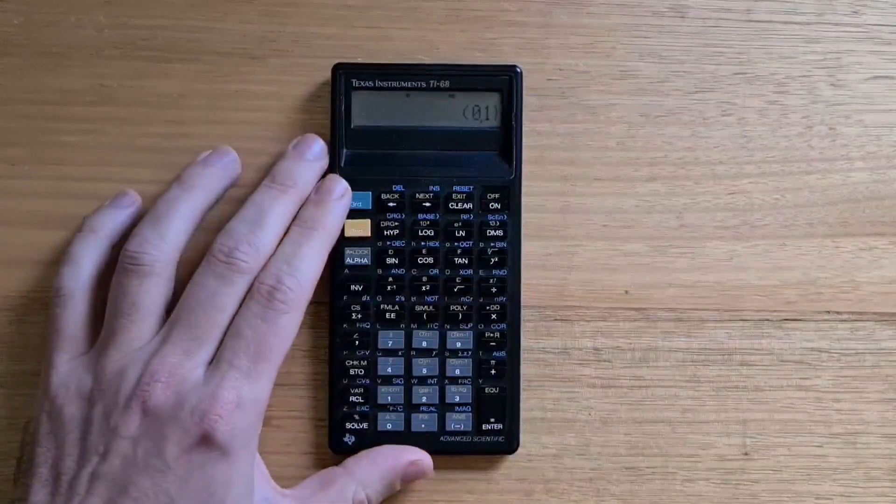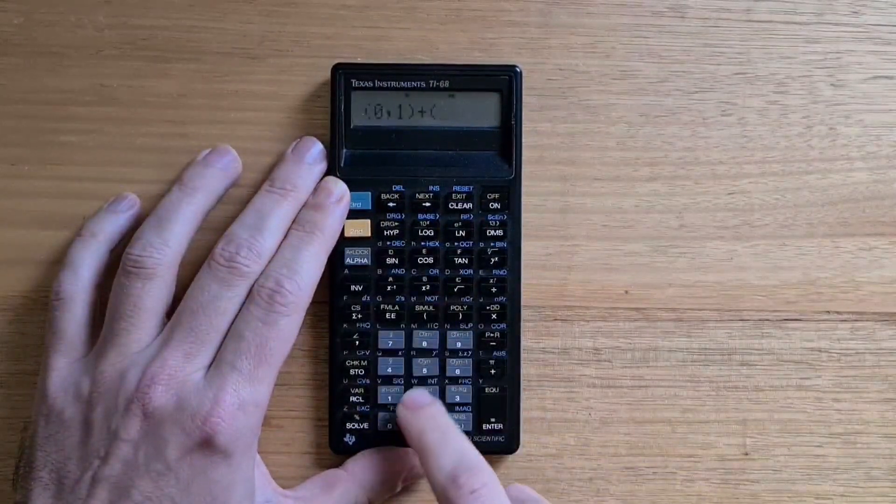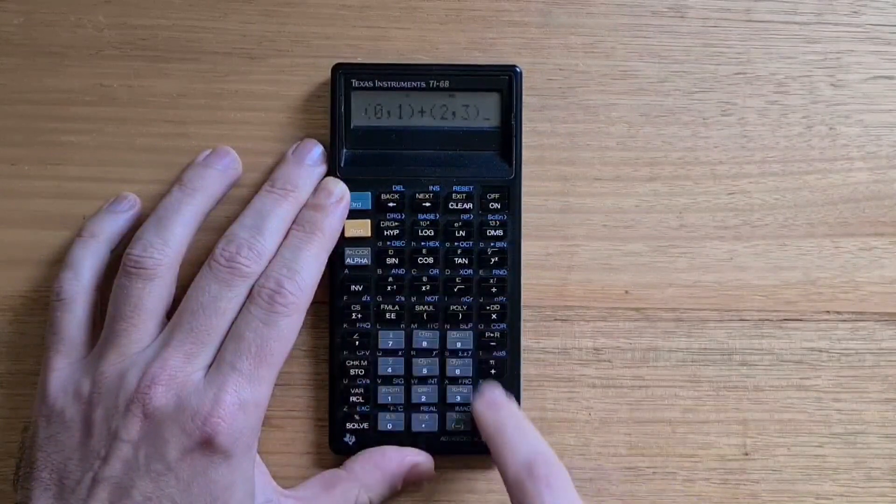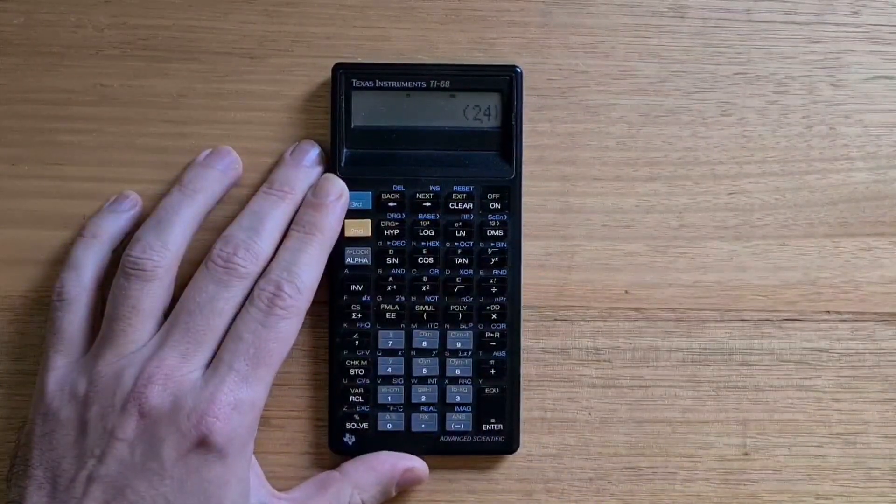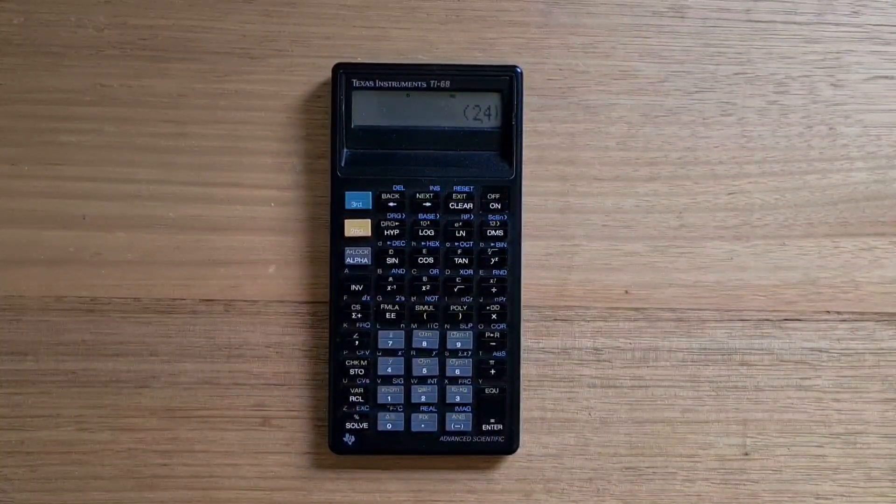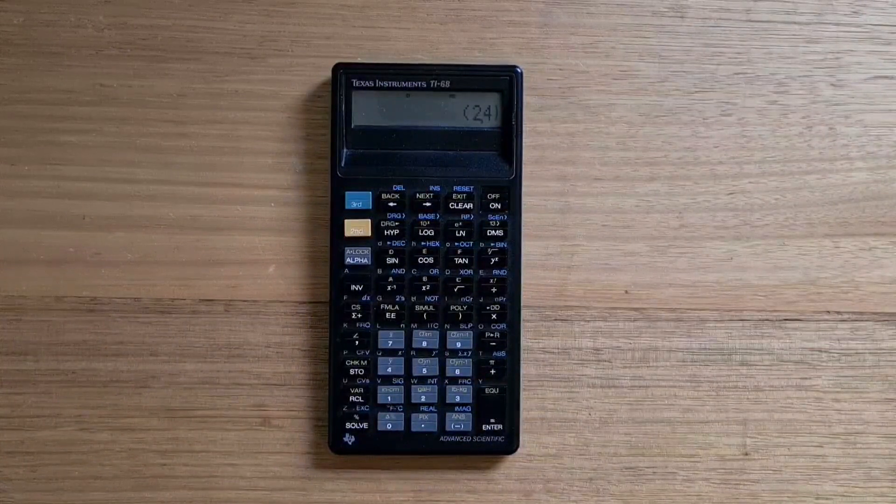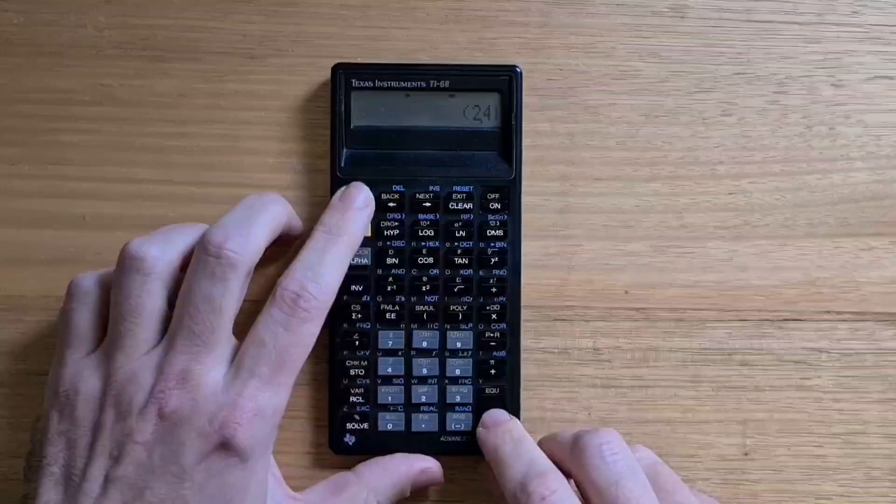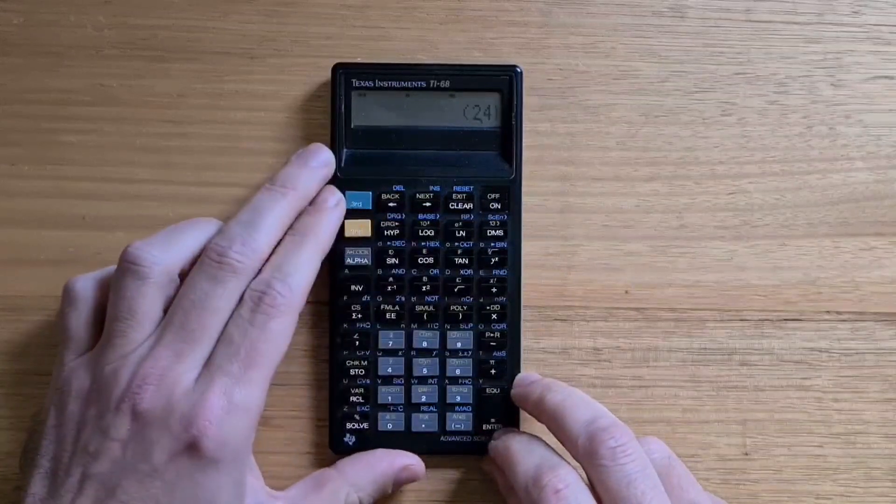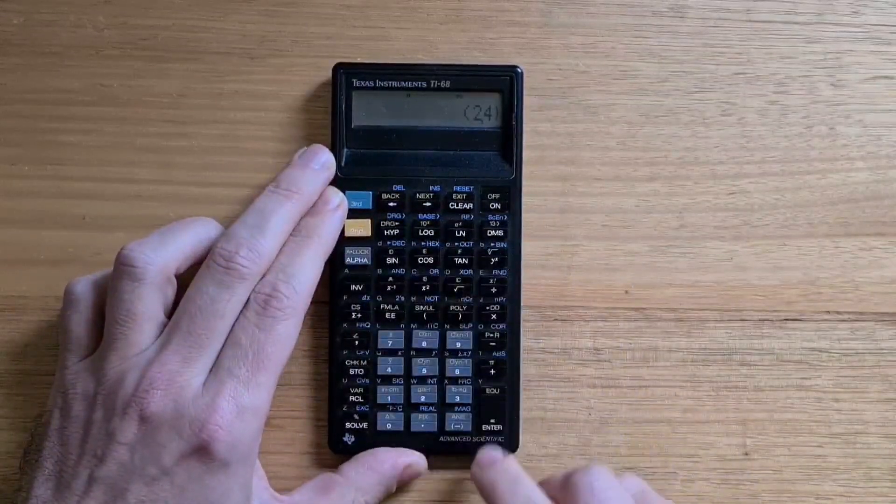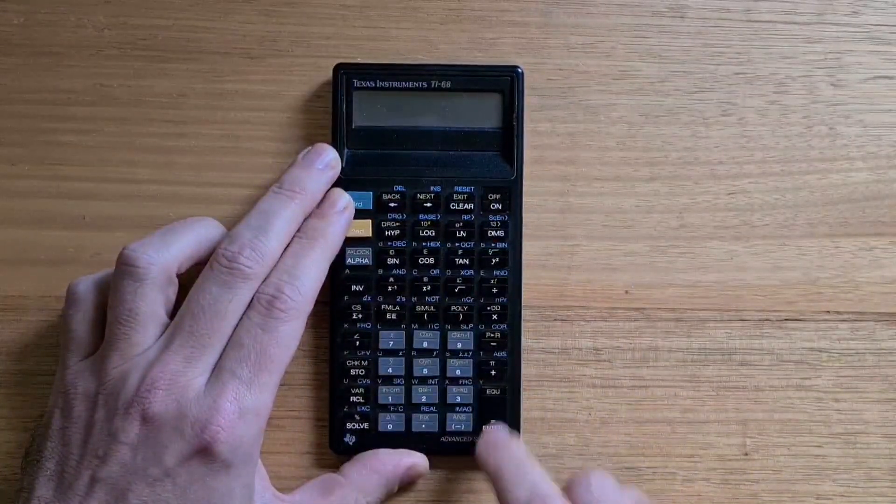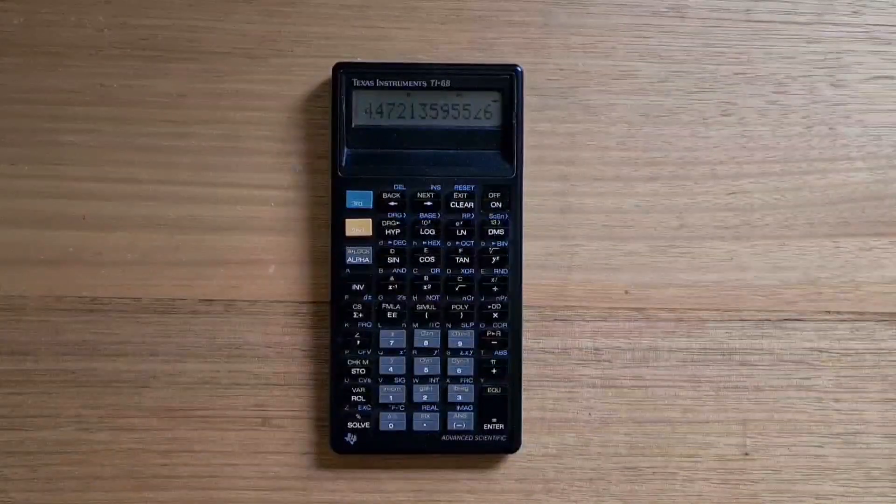We can add another complex number, so say 2 plus 3i, and we see our result. You can toggle the result format to polar using the blue shift and the RP key. So if I add 0, I'll see that in polar format.